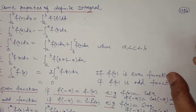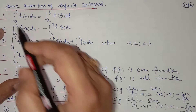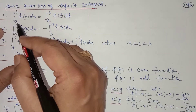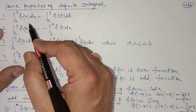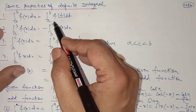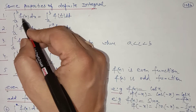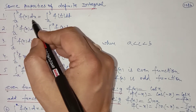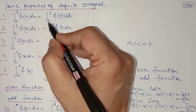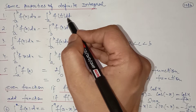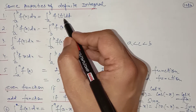Now we have some properties of the definite integral. The first property is: if we change the variable in the definite integral, the value does not change. That is, the definite integral from a to b of f(x) with respect to x can be written as the definite integral from a to b of f(t) with respect to t — we have simply changed the variable.